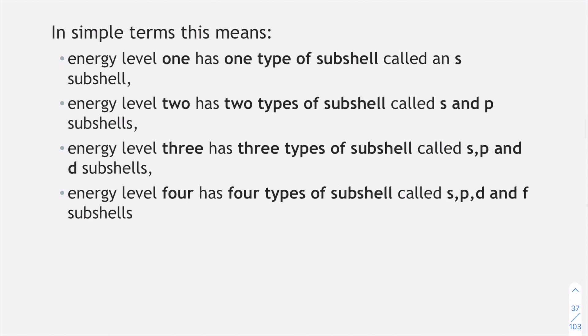Basically your first energy level has got one s orbital, your second energy level has got your s and your p, your third energy level has got your s, p and d and then fourth you've got your s, p, d and f. We only really need to worry about the first three. It's been very rare that we get asked to work about an f orbital so don't panic too much about those ones.